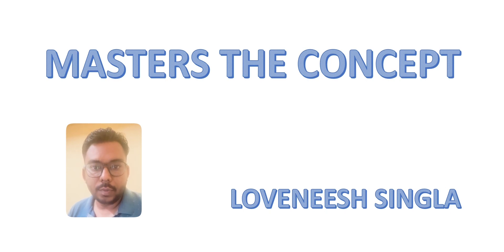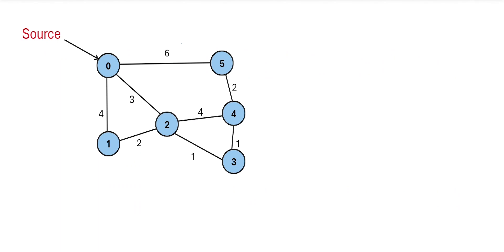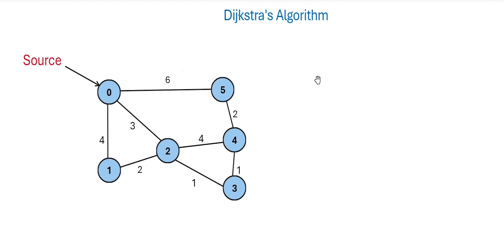Hey guys, what's up! Welcome to my channel 'Master the Concept' where we are mastering DSA. Let's have a look at today's problem. If we have some cities and the distances between connecting cities — 0, 1, 2, 3, 4, 5 — and we need to find the shortest distances from source node 0 to all other cities, which algorithm should we use? You are correct — we can use Dijkstra's algorithm.